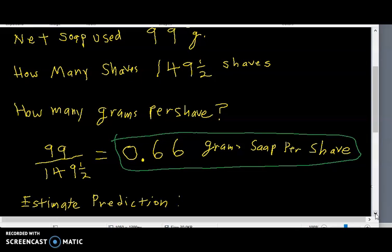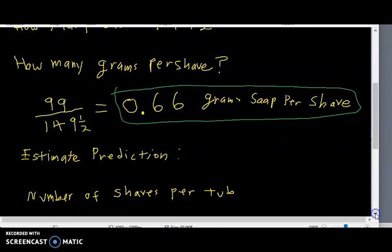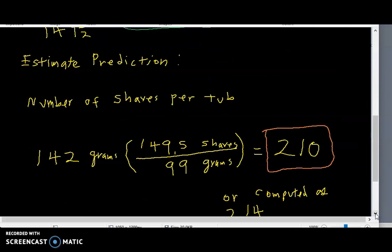The other question was to predict how many shaves per tub of product. 142 grams would be about the same as 5 ounces. So 142 grams of product multiplied by 149 and a half shaves over 99 grams of product used gives us more or less 210 shaves. And that's a prediction since there's still several grams of shaving soap left.